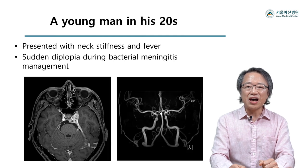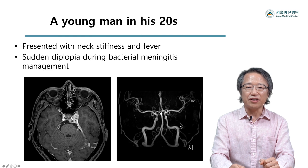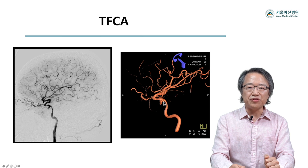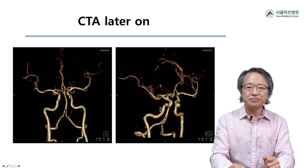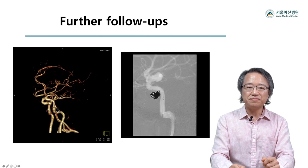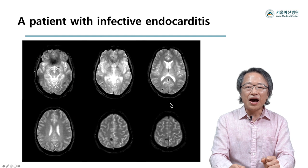This is a case of cavernous segment ICA aneurysm secondary to cavernous sinus thrombophlebitis. Initial MR, MRA, DSA, and 3D angiography showed segmental irregularity with an obvious, quite irregular aneurysm. We placed the patient on CTA follow-up after a full antibiotic regimen — one month, three months, and one year follow-up — eventually undergoing stent-assisted coiling.